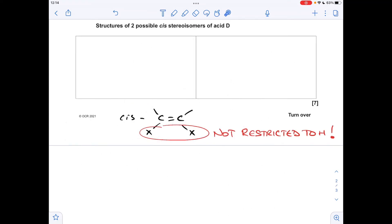So before we move on to the two possible structures for these cis stereoisomers of D, we'll just remind ourselves what cis isomerism is. So cis isomerism is a form of EZ isomerism. So you've got to have different groups on each carbon of the double bond. And then for cis-trans to be possible,